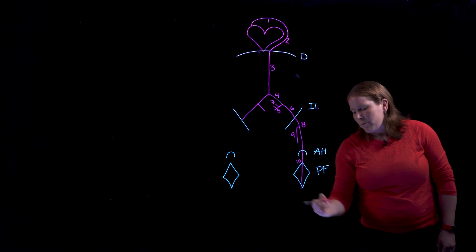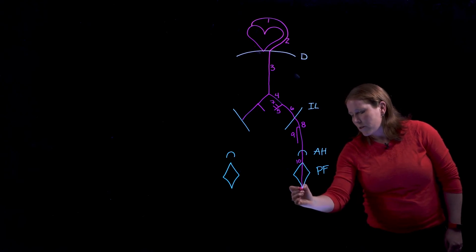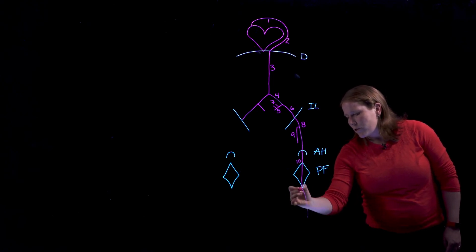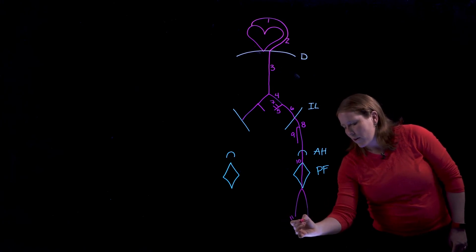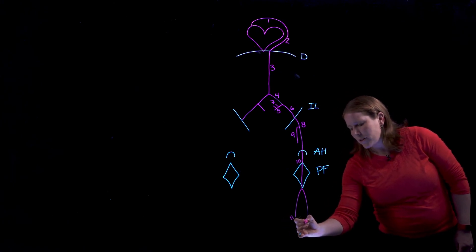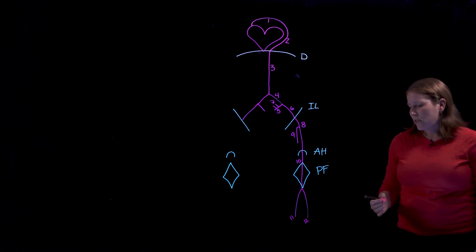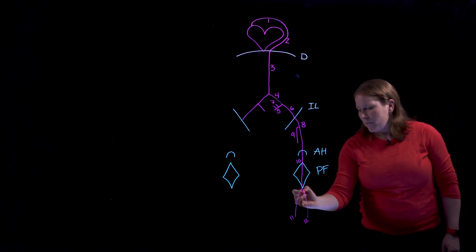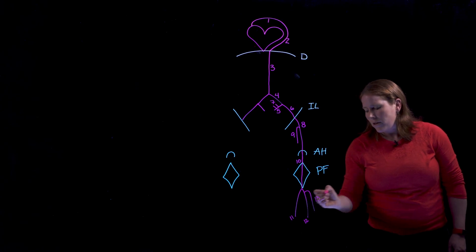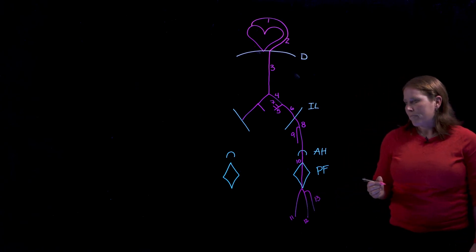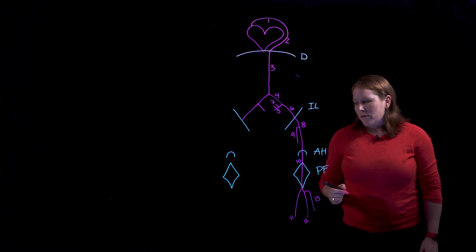Just distal to the popliteal fossa the popliteal artery will split into two branches. We're going to have anterior tibial artery and posterior tibial artery. And from the posterior tibial artery we get a small branch the fibular artery. Everything will be symmetrical on the other side of the body as well.